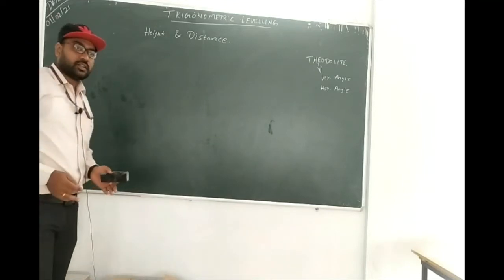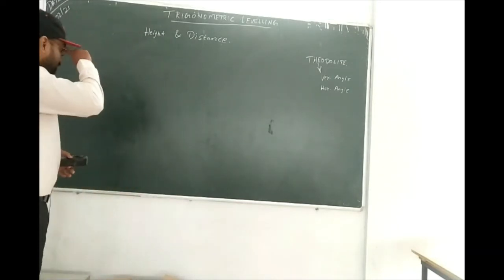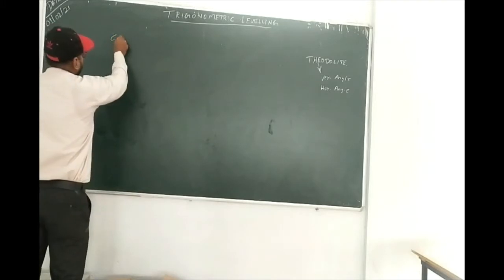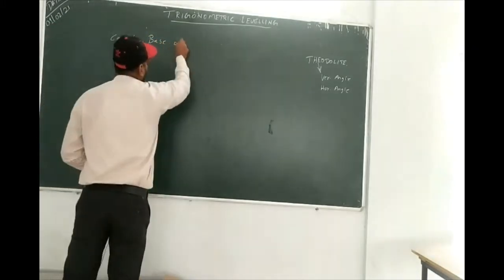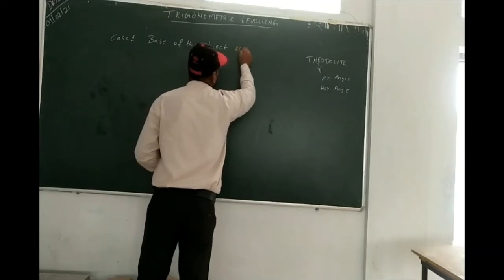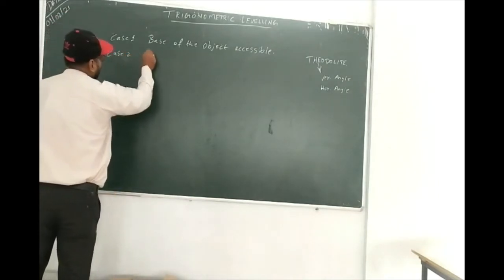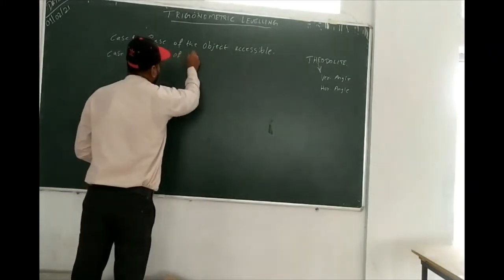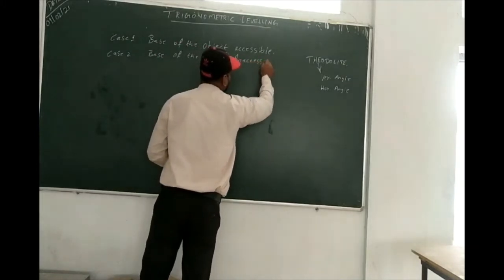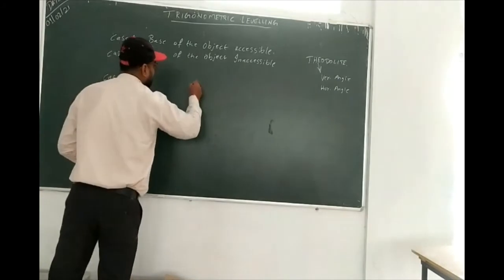Height means the height of the object, and distance means the distance from the instrument point to the object point. To get height and distance, we have three cases. Case one: if the base of the object is accessible. Case two: if the base of the object is inaccessible. Case three is also about inaccessible base but with a difference.